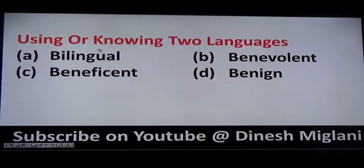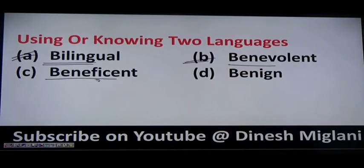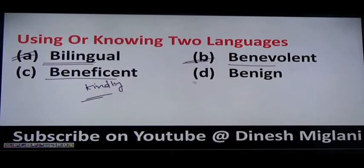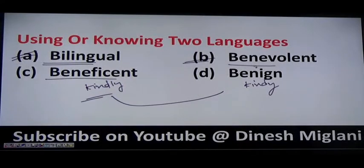A person who uses or knows two languages is said to be bilingual, B-I-L-I-N-G-U-A-L. Benevolent means one who takes care of others — udharwadi. Beneficent, B-E-N-E-F-I-C-E-N-T, means one who is very kind. Benign, B-E-N-I-G-N, also means kindly — both beneficent and benign are similar in meaning. Life of a person written by someone else is said to be a biography.